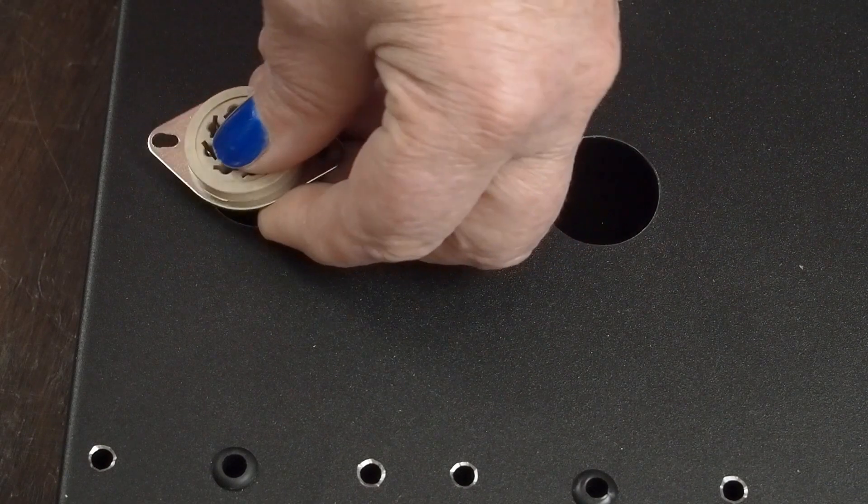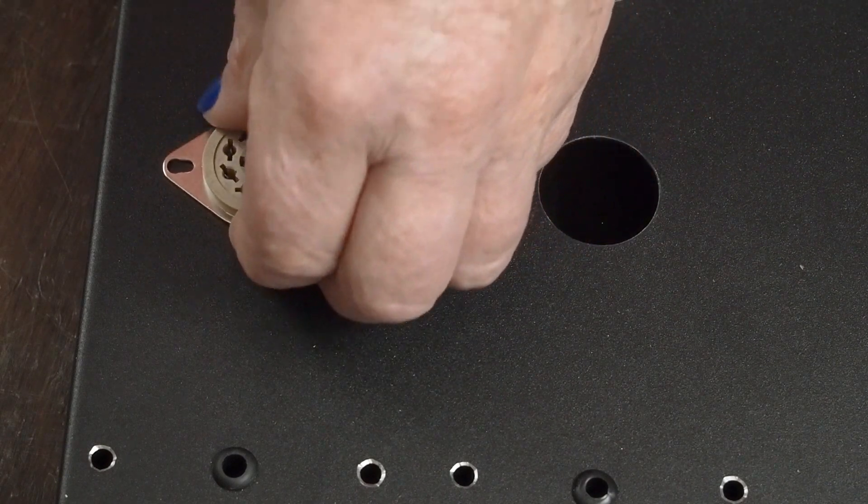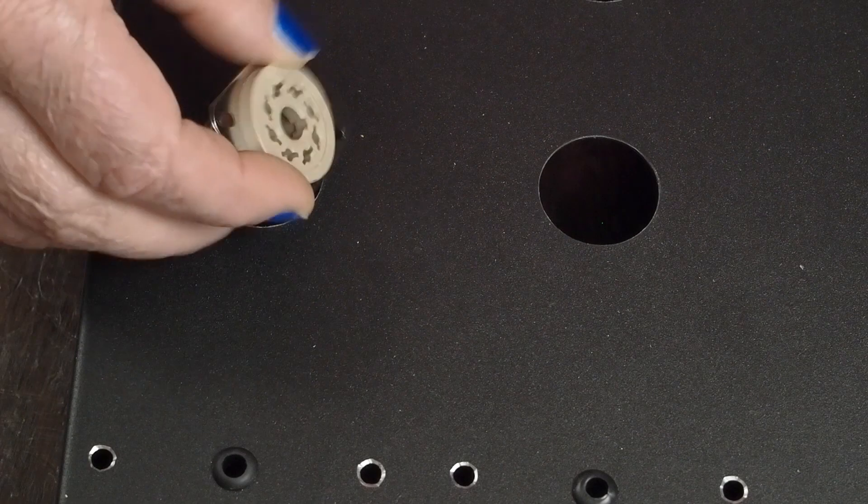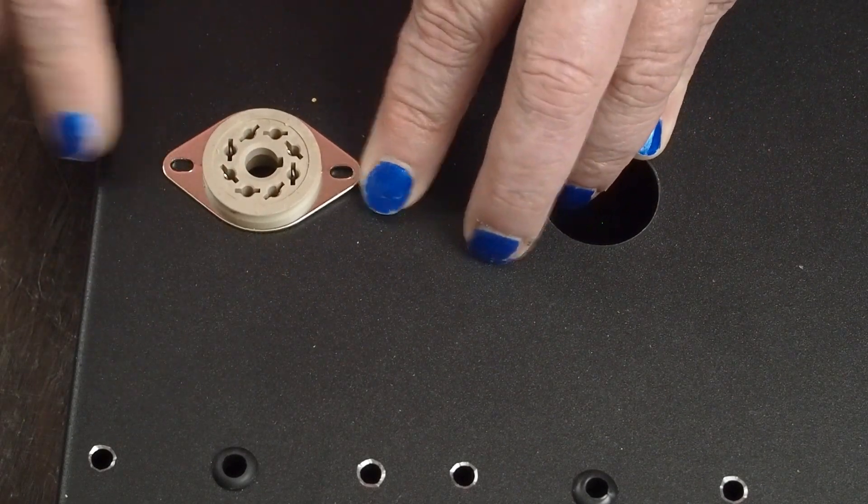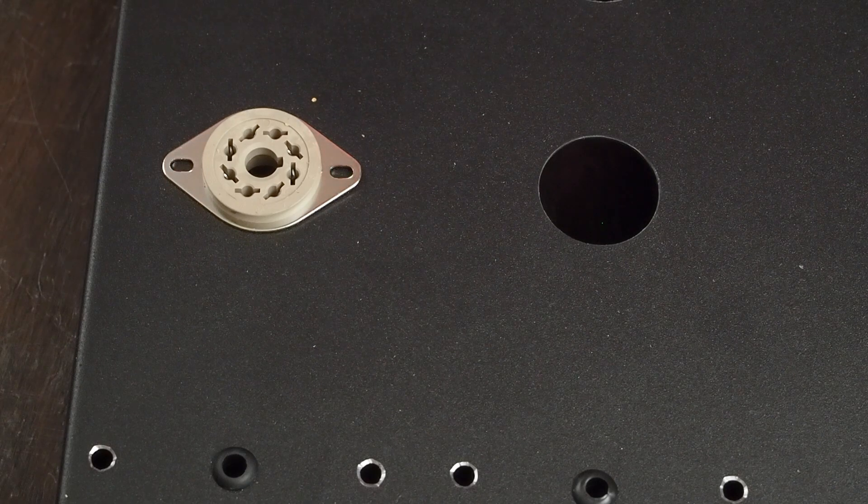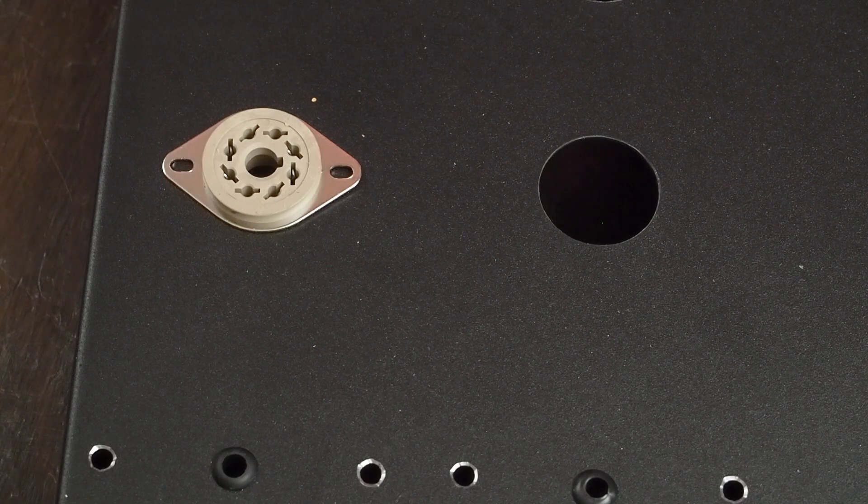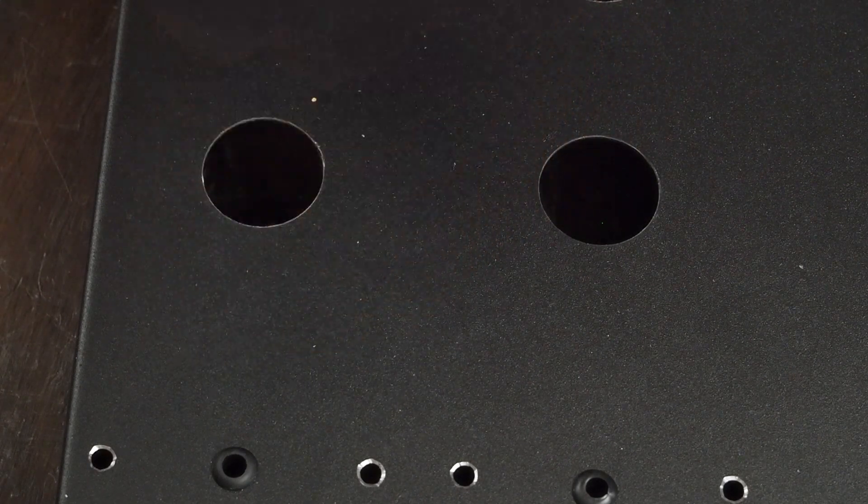I think if you don't use a Greenlee punch and you have an ugly looking hole, then you may have to mount them from the top like that. I think most of the time when I see people with them mounted on the top like this, it's because they butchered the hole and that's the only choice they have.